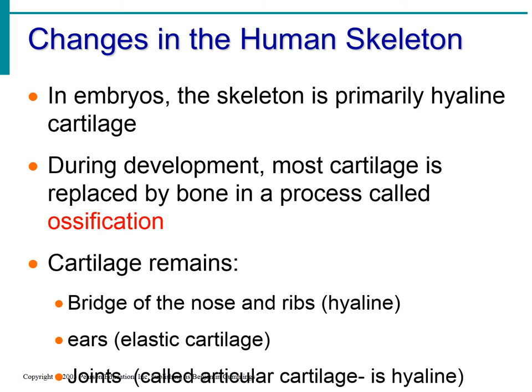We do have bone in our face and skull to protect the brain during the birthing process, but most of our skeleton is hyaline cartilage. Hyaline cartilage is avascular — it doesn't have many blood vessels — which is one reason cartilage is so hard to repair. Many people have surgery on joint cartilage because once it's damaged it takes a long time to heal without a constant blood supply. We have two types of ossification: endochondral ossification and intramembranous ossification.